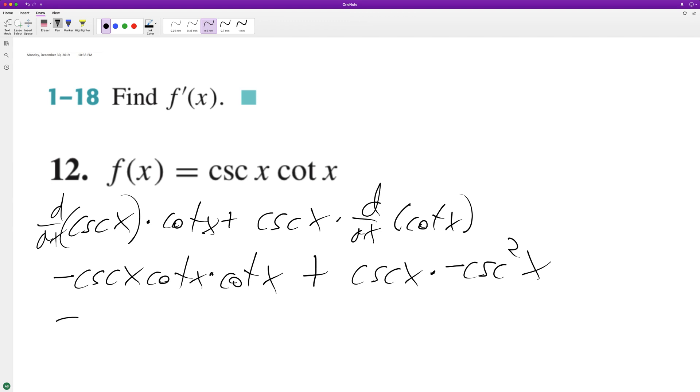So we end up with negative cosecant of x times cotangent squared of x plus negative cosecant cubed x.